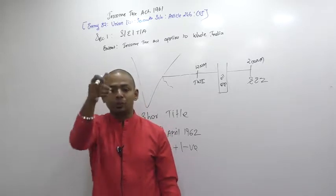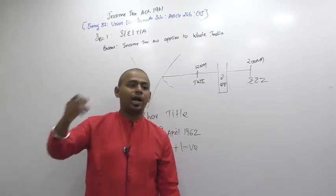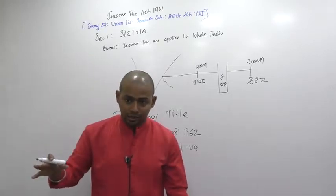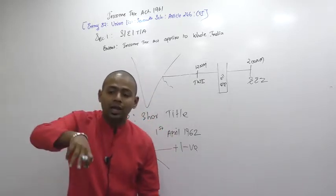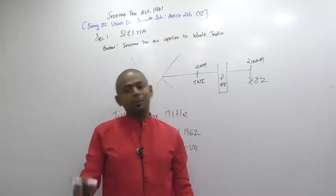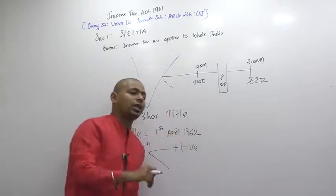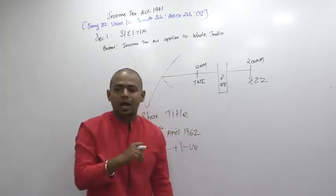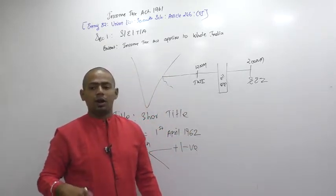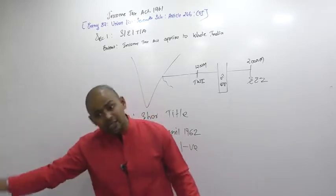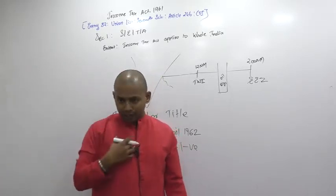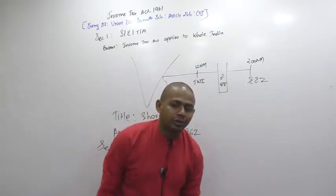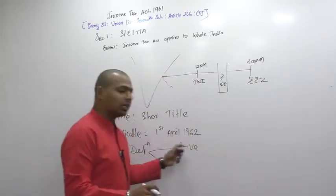So we have a half-page definition of domestic company: a company incorporated in India, or a company which has made arrangements to distribute dividends in India, is a domestic company. If a company does not meet these conditions, it is a foreign company. Same with resident: you need to stay in India for 182 days to become a resident. A person other than a resident is a non-resident — that is a negative definition. One term is defined positively; its opposite is written in negative language.